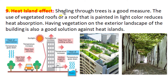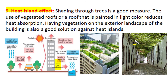Heat island effect is another consideration in site selection and design of green buildings in urban areas. Re-emission of heat absorbed by building construction materials and surfaces, heat produced by vehicles and equipment used for air conditioning, and heat emitted from road surfaces and civil masonry structures produce increased temperatures in urban positions — that is called the heat island effect. Shading through trees can reduce the heat island effect. Use of vegetation on roofs or roofs painted with light-reflective colors reduces heat absorption, and having vegetation on exterior landscapes or in nearby vicinity is a very good solution against the heat island effect.